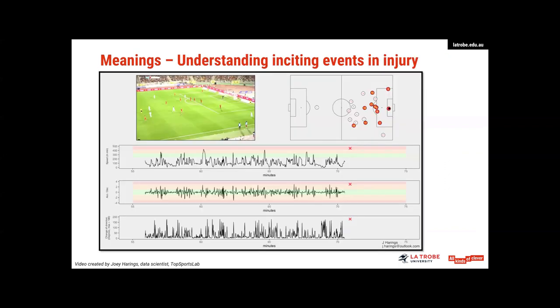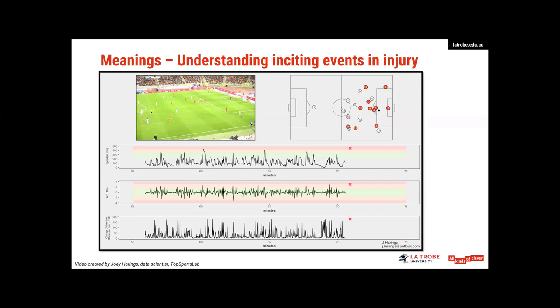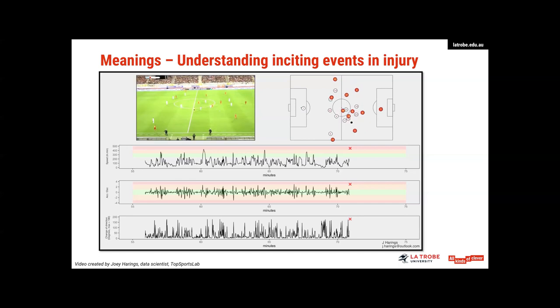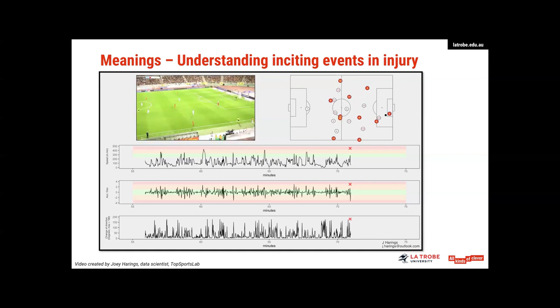I really wanted to show everyone this video. One reason was it was some fantastic work by Joey Harrings, who's a data scientist for top sports labs. So what he managed to put together here was perfect to be able to show people what our metrics may actually mean. So you can see in the top left corner, we have video of the game. We've got an animated representation of players and their numbers and the pitch off to the right. And then underneath, we have speed, acceleration, deceleration, and change of direction, which is moving in real time with the video. Now that red X on the screen is actually a player about to get injured. Now it's the bottom right player, player three. And if we watch them, we can actually track the moment that they pass the ball and they pull up injured holding their hamstring.